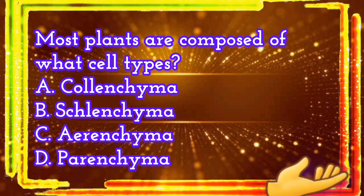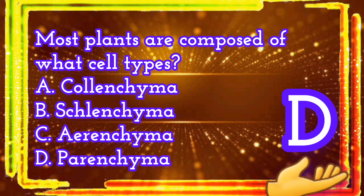Last but not the least. Most plants are composed of what cell types? A. Collenchyma. B. Sclerenchyma. C. Aerenchyma. D. Parenchyma. The correct answer is letter D. Parenchyma.